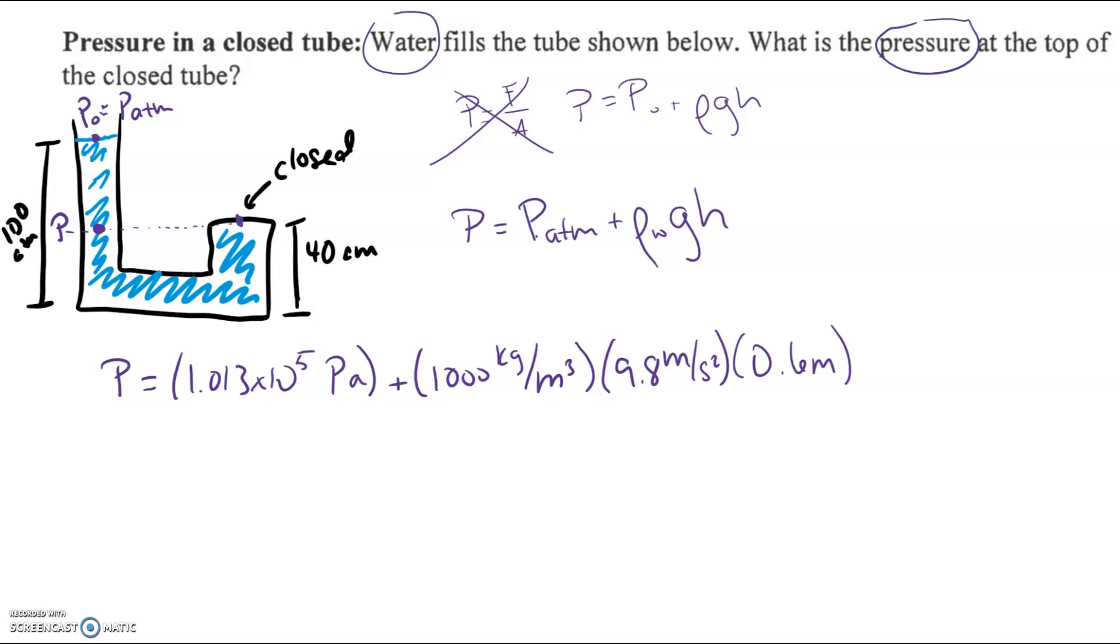That's probably one of the easiest places to make a simple error here. So then computing that, plugging and chugging in our calculator. How many sig figs? We have no idea. Great, okay, so we'll go with three sig figs here. 1.07 times 10 to the 5th pascals.